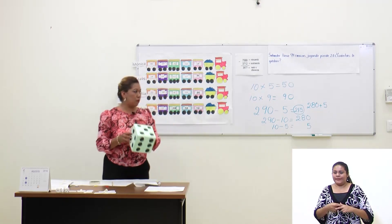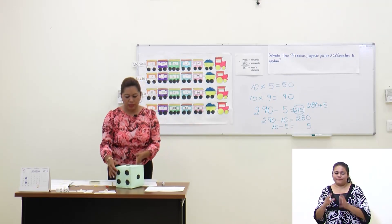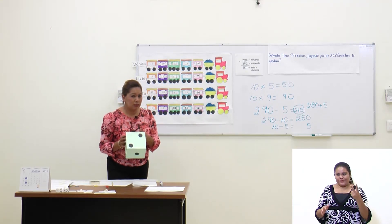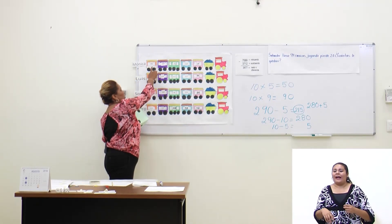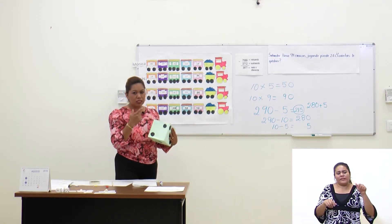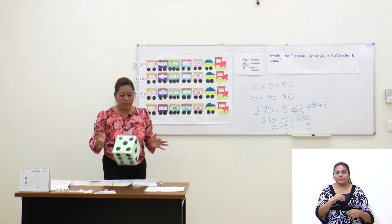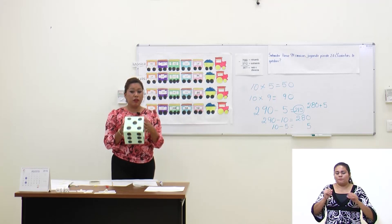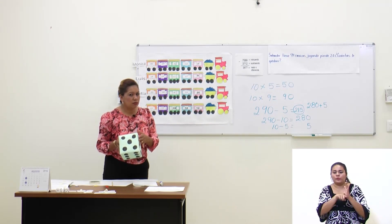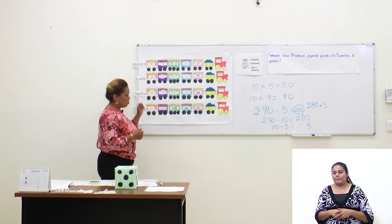Vamos a jugarlo. Mónica lanza el dado y obtiene el número 2. Ese 2 se lo vamos a restar al número 16. 16 menos 2: 14. Le toca ahora el turno a Luis. Luis lanza el dado y obtiene el número 5. Tenemos 14, le quito 5. ¿Qué número tengo? 9, exactamente.